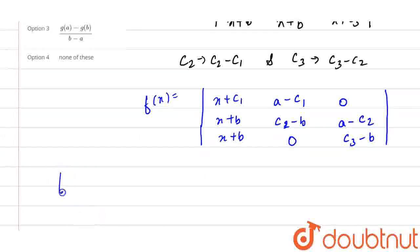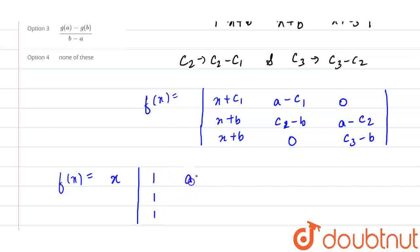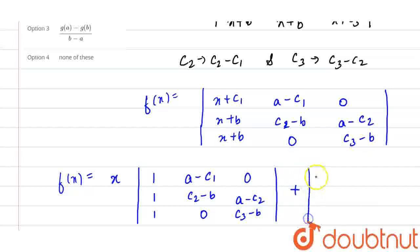Now we can write f(x) by taking x common from column 1, giving a factor of x times the determinant with first column entries 1, 1, 1 and remaining entries a−c1, c2−b, 0 in column 2, and 0, a−c2, c3−b in column 3. Plus a second determinant with c1, b, b in column 1 and the same remaining entries a−c1, c2−b, 0 and 0, a−c2, c3−b.